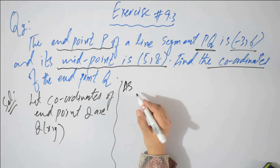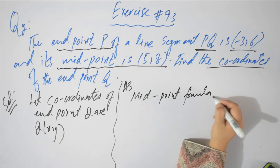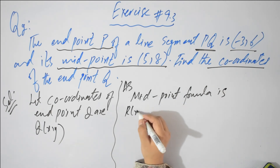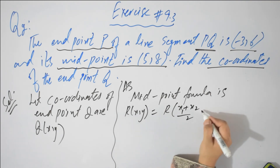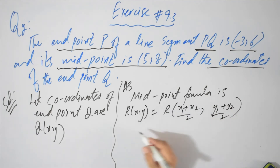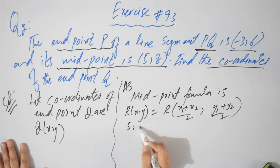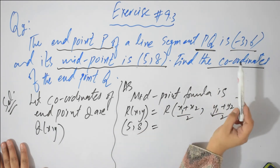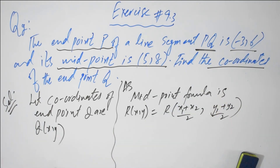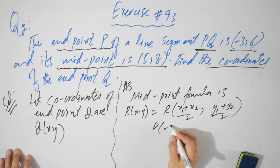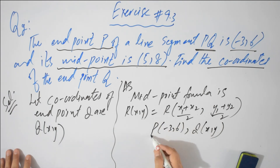As the midpoint formula is R of (x, y) equals R of (x1 plus x2 by 2, y1 plus y2 by 2). The midpoint value is 5 comma 8. One coordinate is P of minus 3 comma 6 and Q of x comma y. Midpoint is obviously what we already have. This implies the value of midpoint equals 5 comma 8.